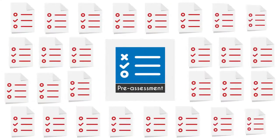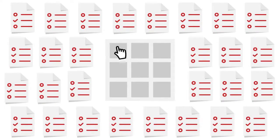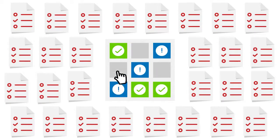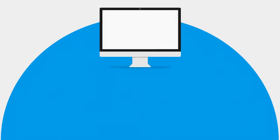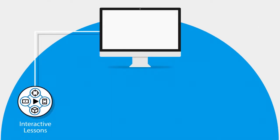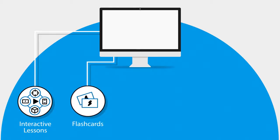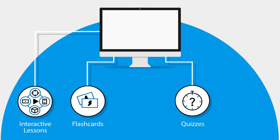In this UCertify course, you will receive 28 pre-assessment questions that will help you identify areas for improvement before you begin the course. It consists of 15 interactive lessons and learning resources with 110 flashcards, 81 quizzes, and 110 glossary terms.